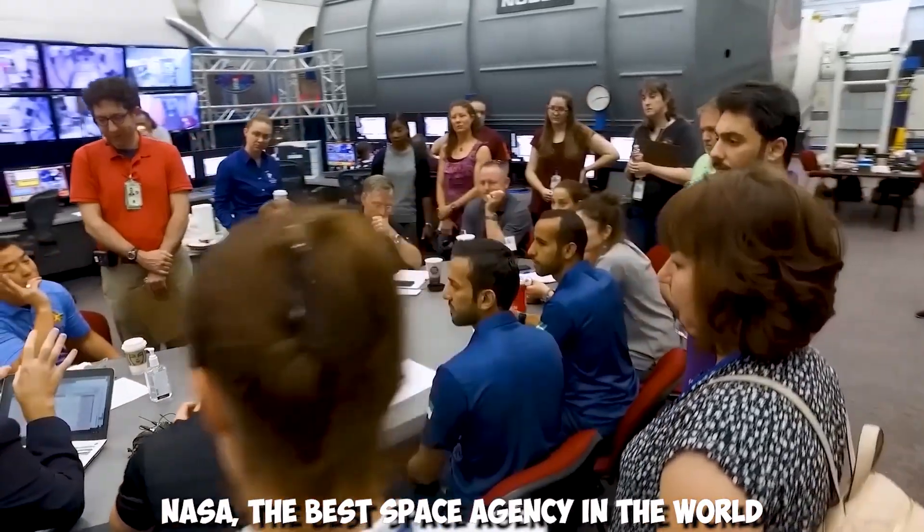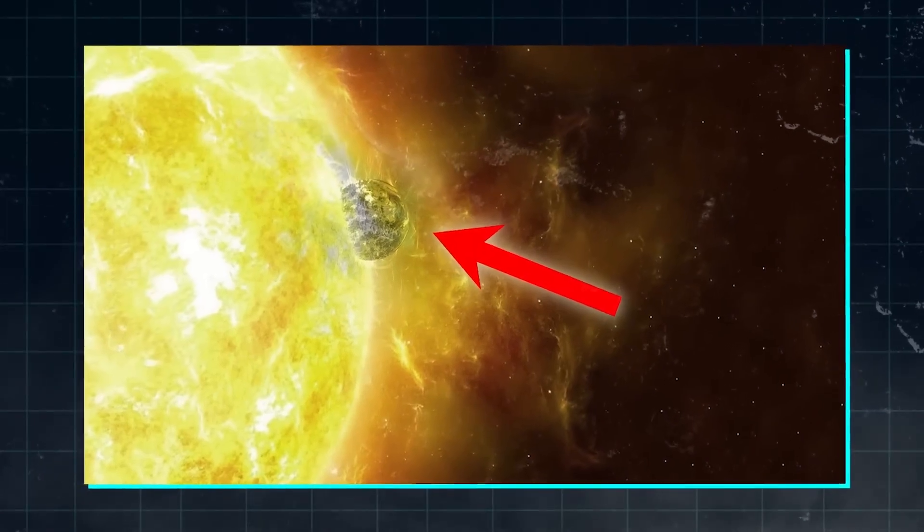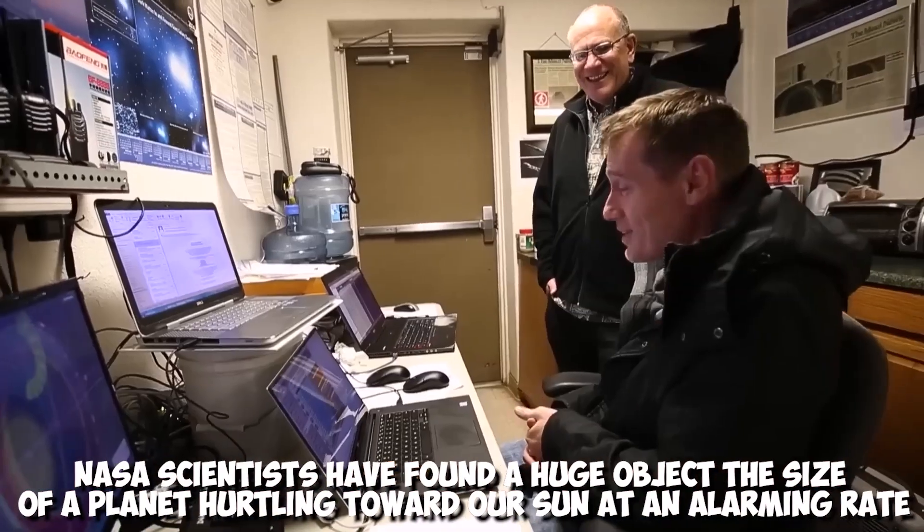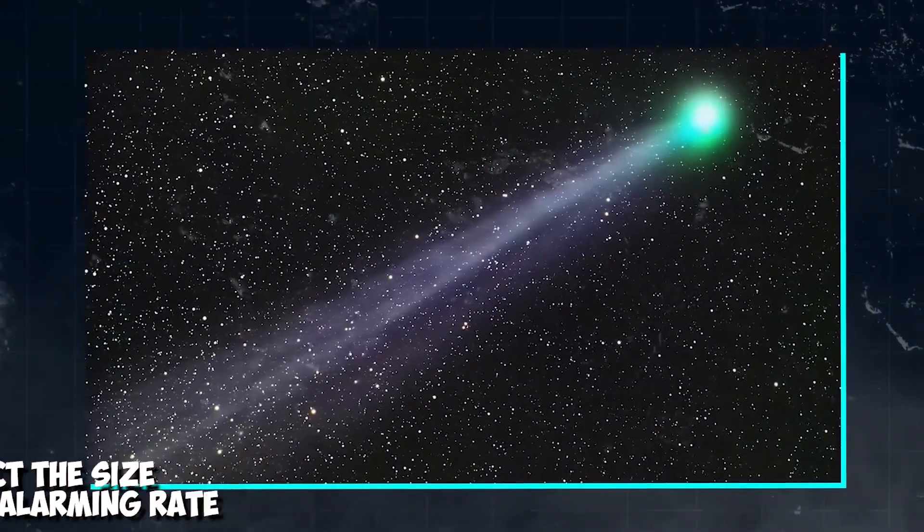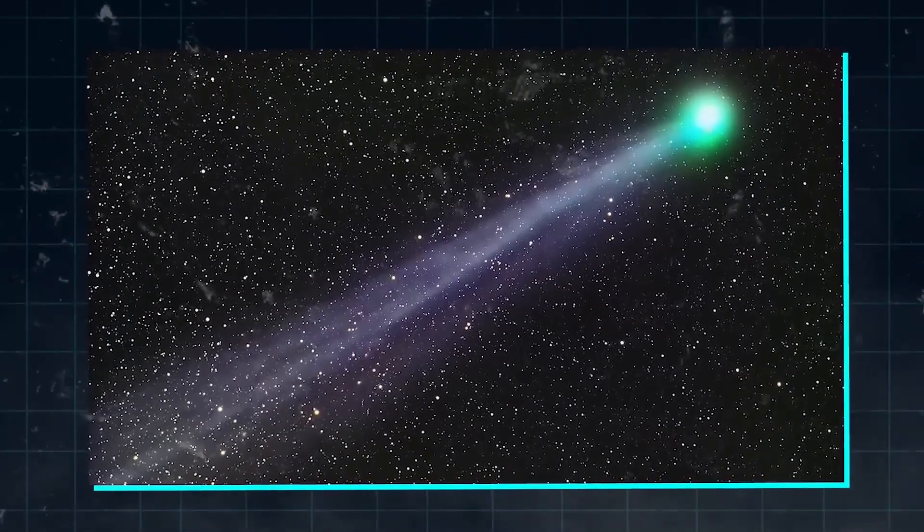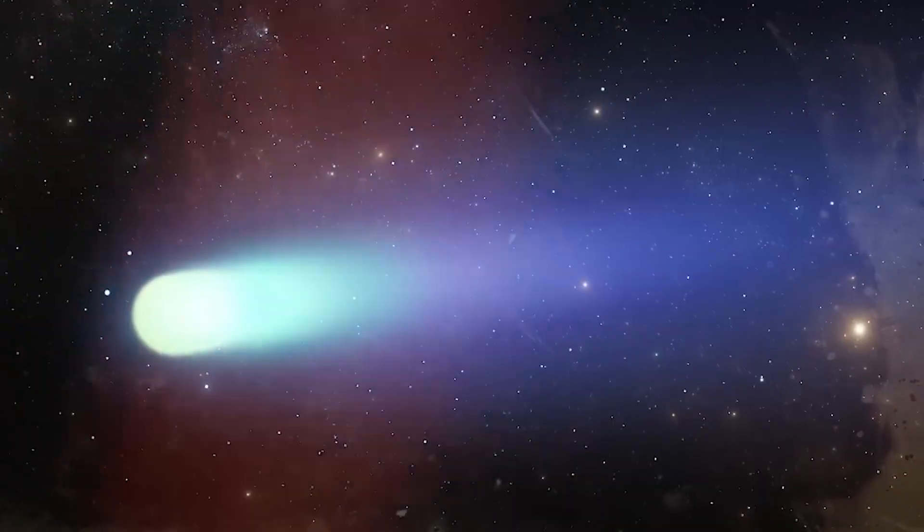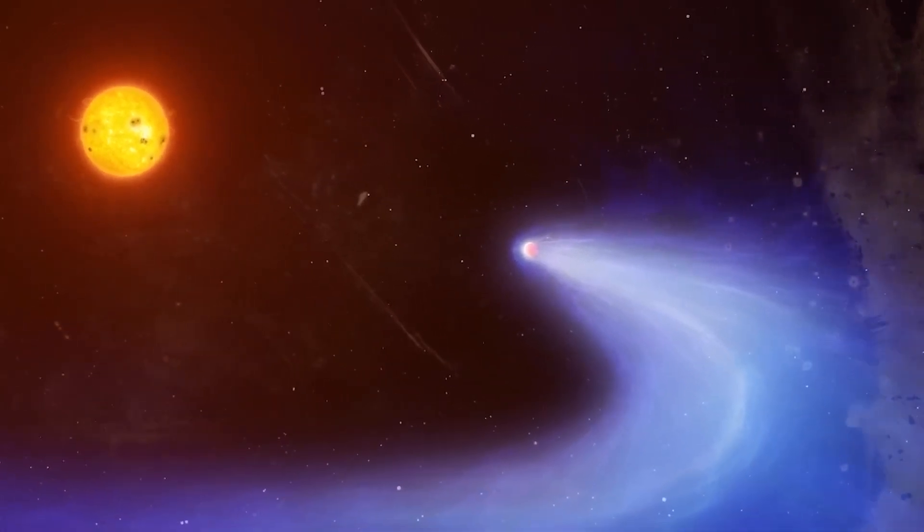NASA, the best space agency in the world, recently made a startling discovery that has shocked the scientific community. NASA scientists have found a huge object the size of a planet hurtling towards our Sun at an alarming rate. They did this by using high-tech equipment. The path of the object is so scary that some experts have called it terrifying.